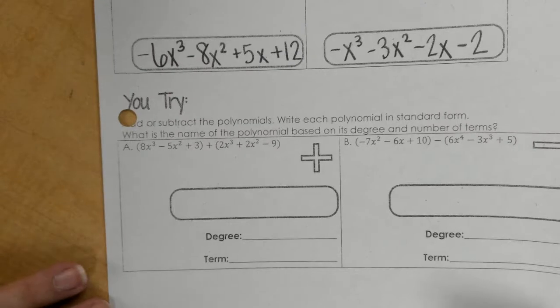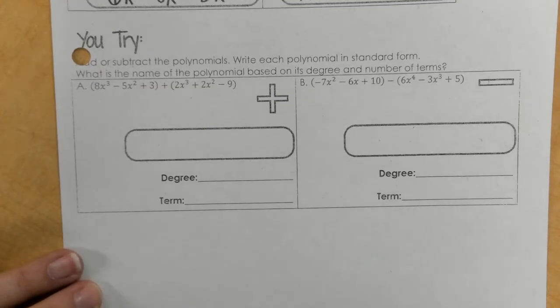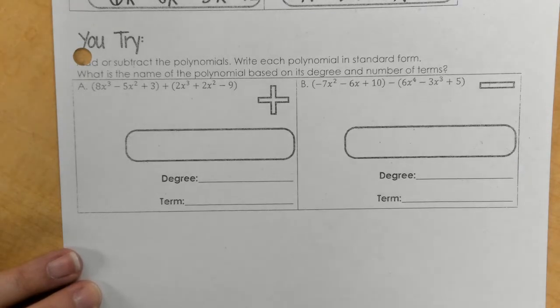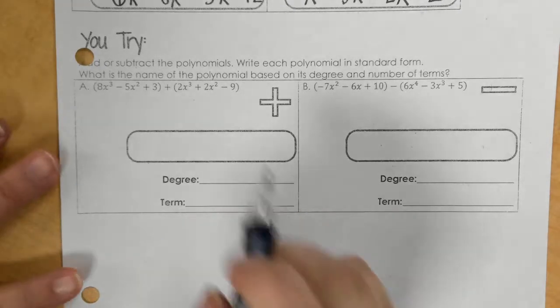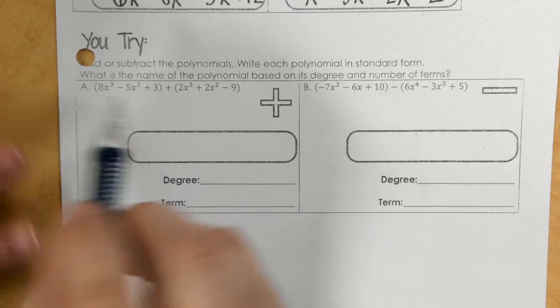Okay. Down here, for the bottom part, it says you try, add or subtract the polynomials, write each polynomial in standard form. What is the name of the polynomial based on its degree and number of terms? So, for this one, I need to go ahead and add my like terms, so I don't have to change anything in this problem.